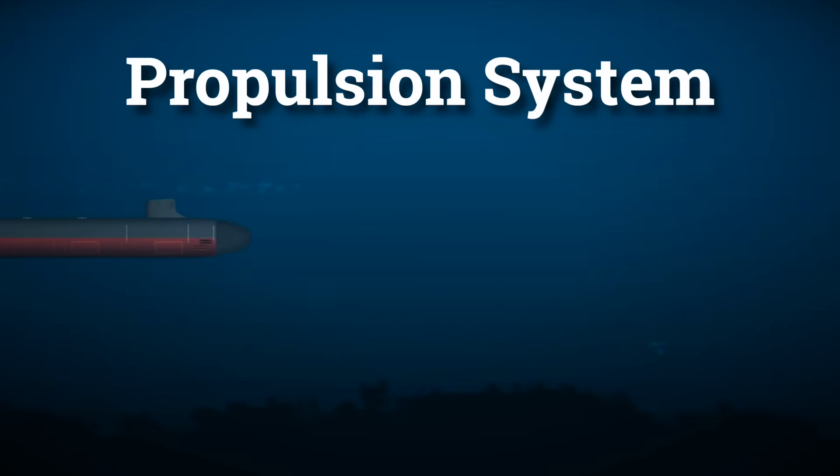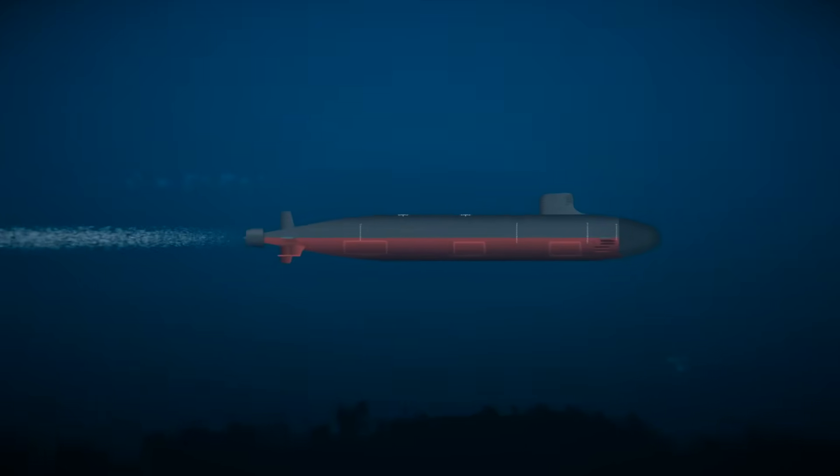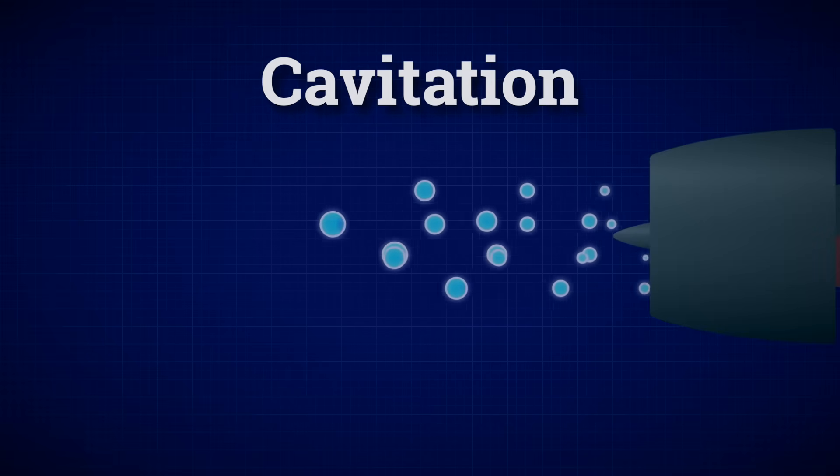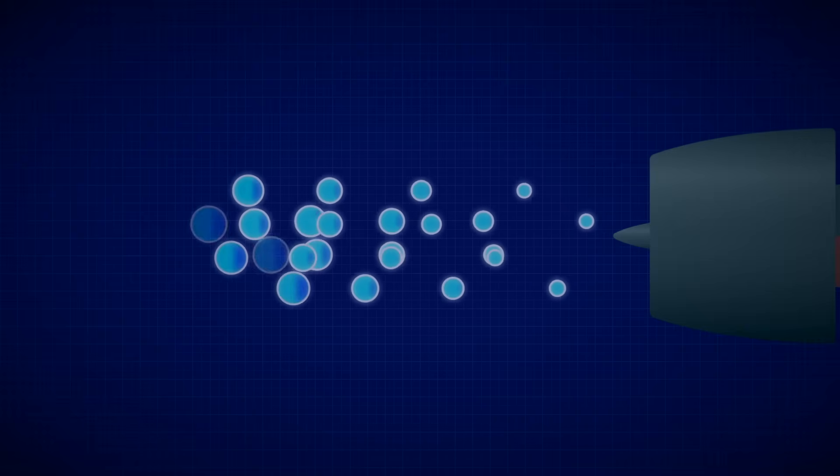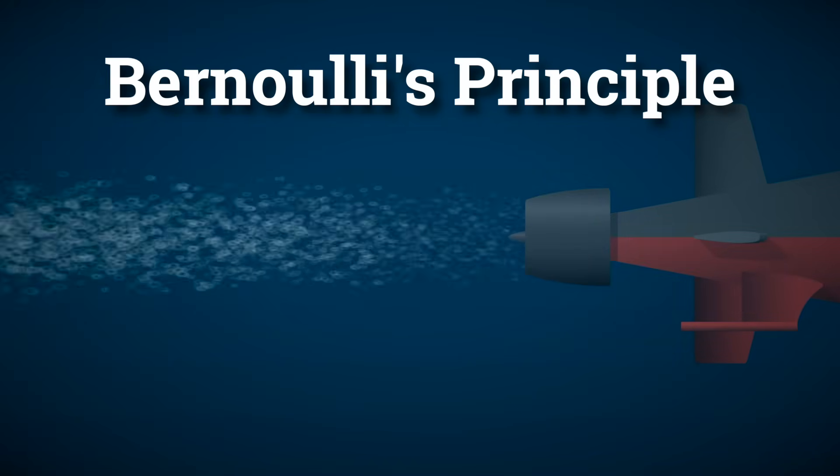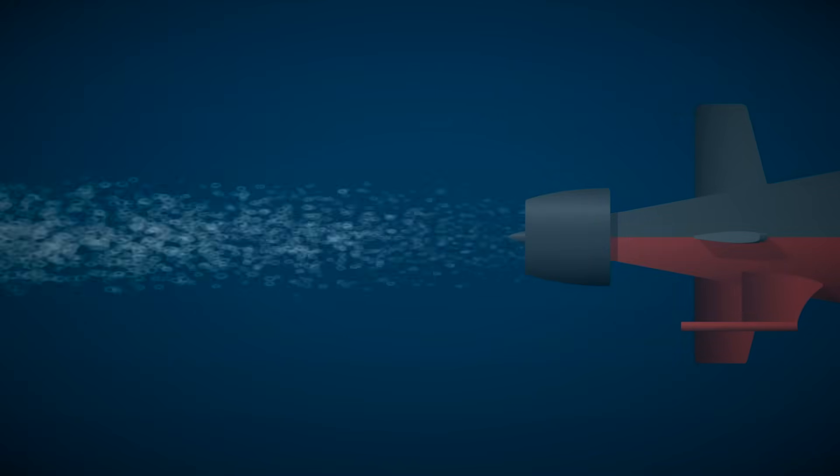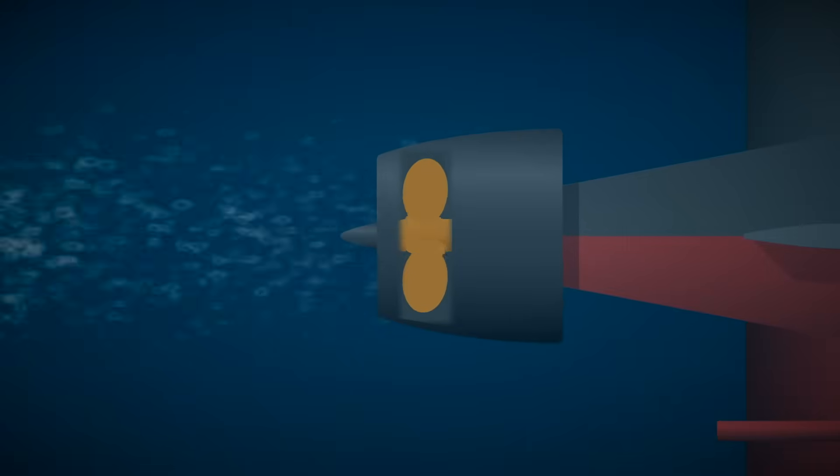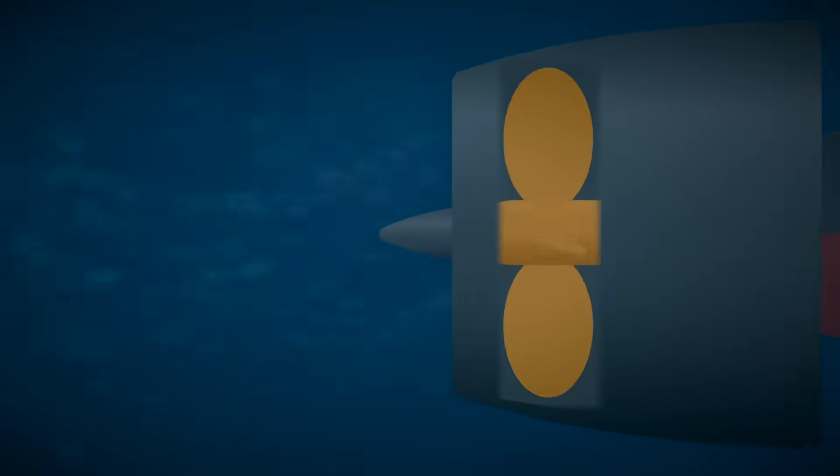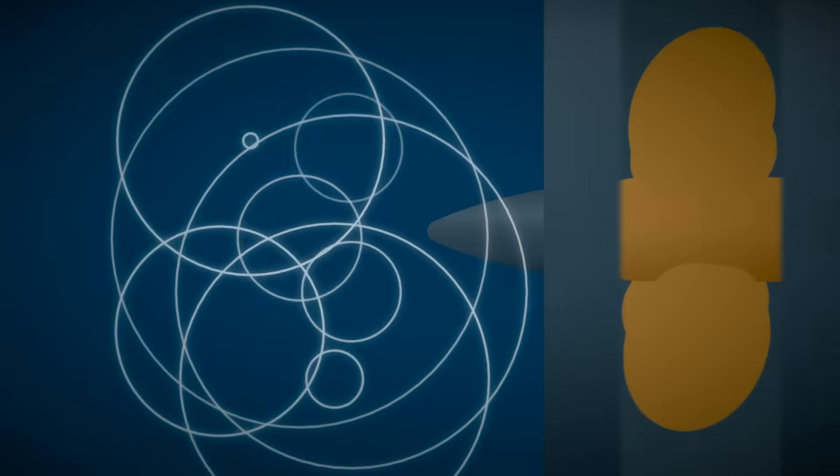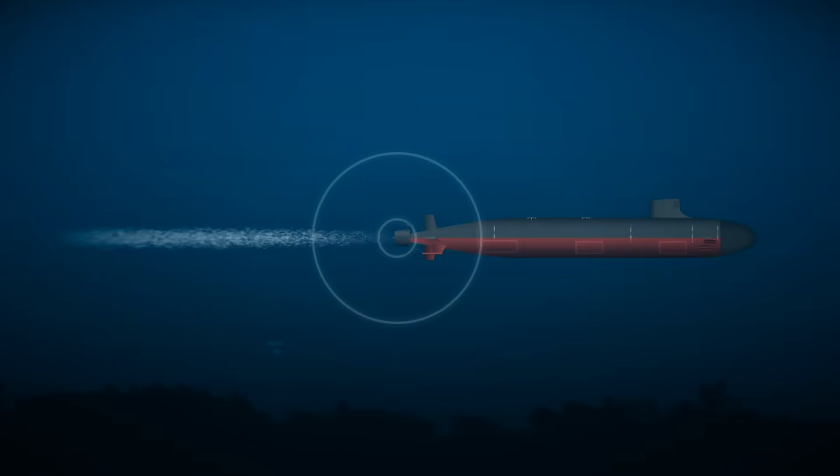Even the propulsion system is built for stealth. Traditional propellers are noisy, especially when they spin fast. They create tiny air bubbles through a process called cavitation. This happens because when water pressure drops, the boiling point of water also drops, and vice versa. According to Bernoulli's principle, the faster the water flows, like it does on a propeller's trailing edge when it spins too quickly, the lower the pressure. The water around it then boils and forms vapor bubbles that collapse violently, creating shockwaves and telltale noise that can travel for miles.